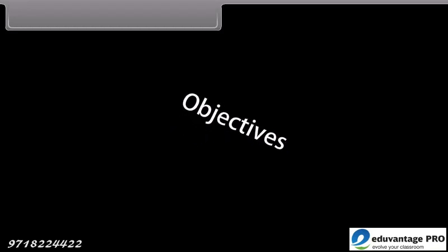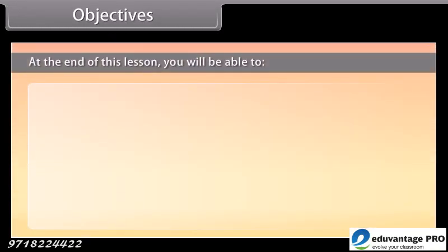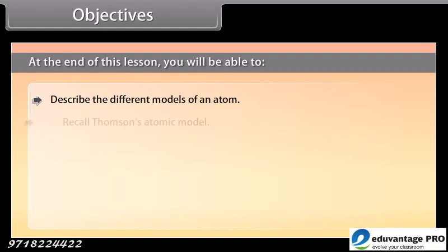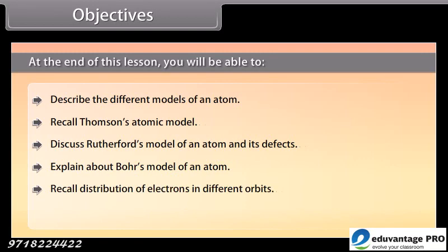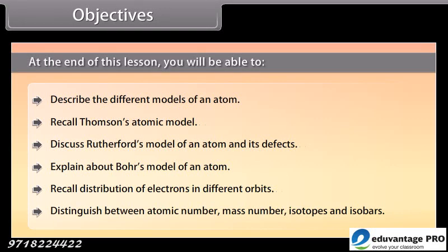Objectives. At the end of this lesson, you will be able to describe the different models of an atom, recall Thomson's atomic model, discuss Rutherford's model of an atom and its defects, explain about Bohr's model of an atom, recall distribution of electrons in different orbits, distinguish between atomic number, mass number, isotopes and isobars.